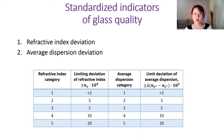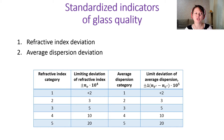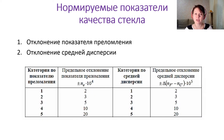What about standardized indicators of glass quality? They are refractive index deviation and average dispersion deviation. These are deviations from the refractive index and mean dispersion that should be present in this glass type — the deviation between the real refractive index of the glass obtained after synthesis and the refractive index that should be in this type of glass based on the documents.